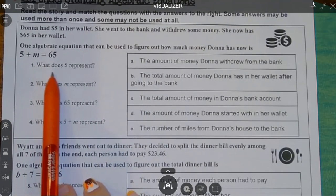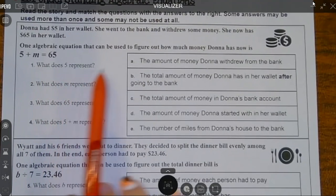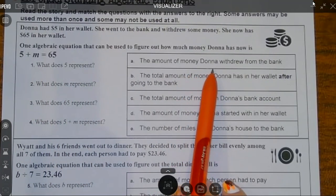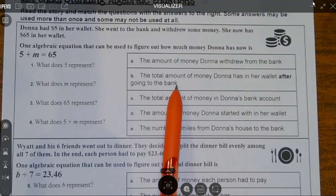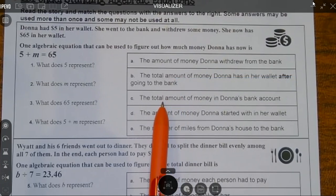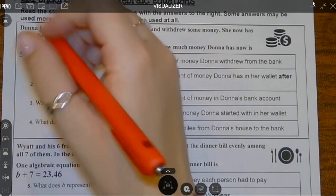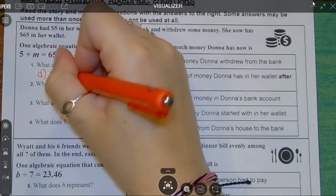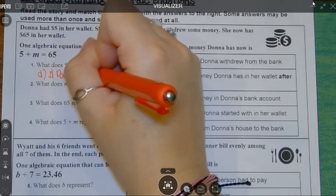So in this scenario, what does the five represent? Is it the amount of money she withdrew from the bank? No, we don't know how much she withdrew. Is it the total amount of money she has in her wallet after she went to the bank? No, it's definitely not the five. The total amount of money in her bank account? No. The amount of money she started with in her wallet? Yes. So five is the money Donna started with.